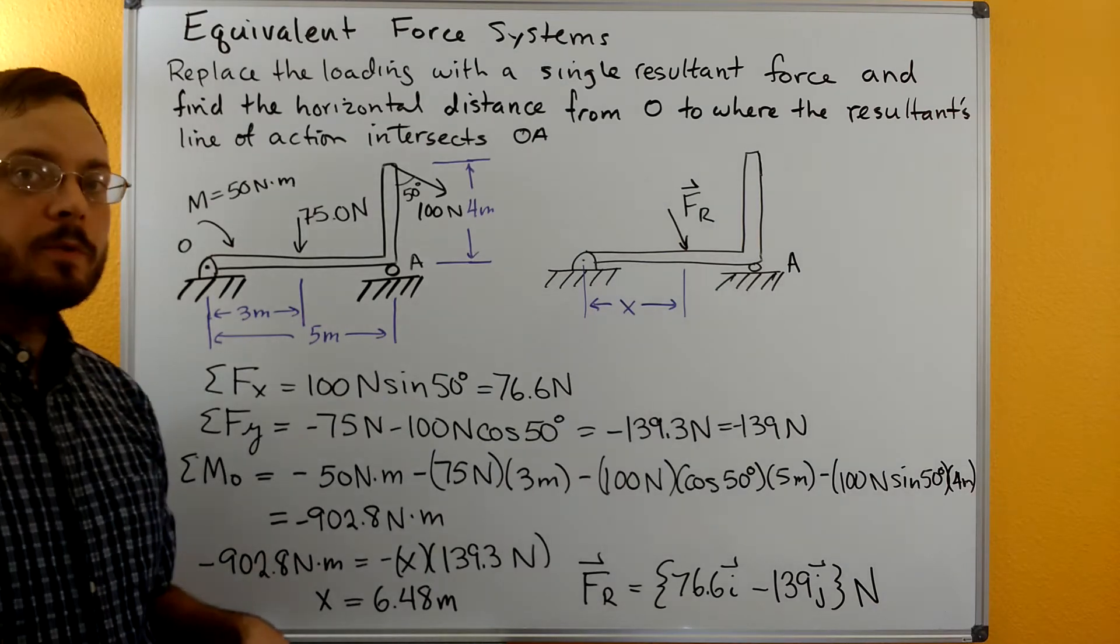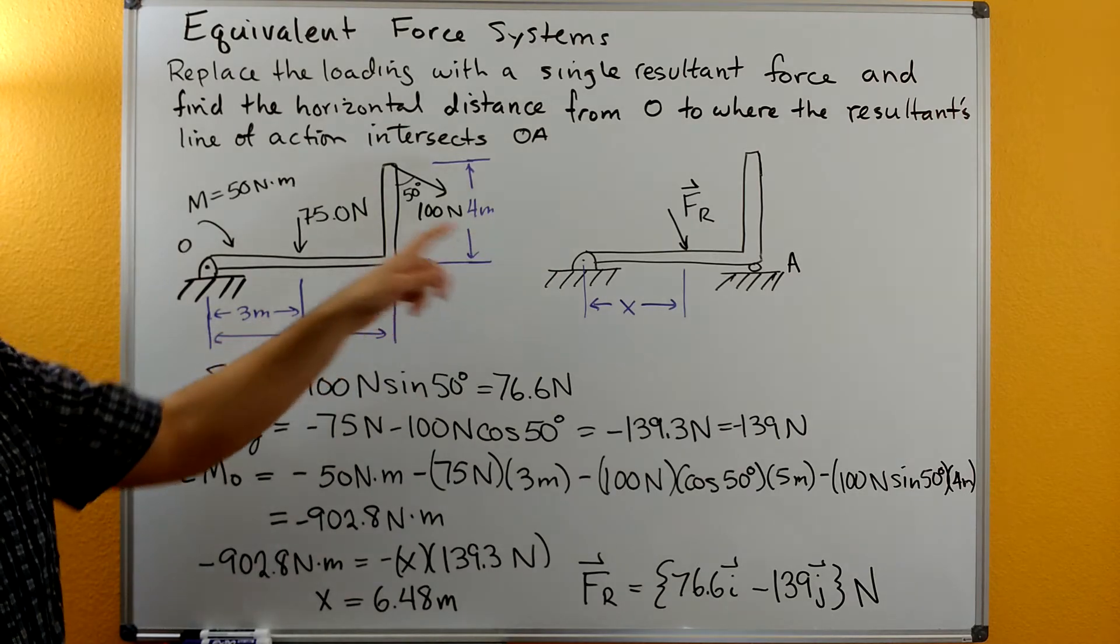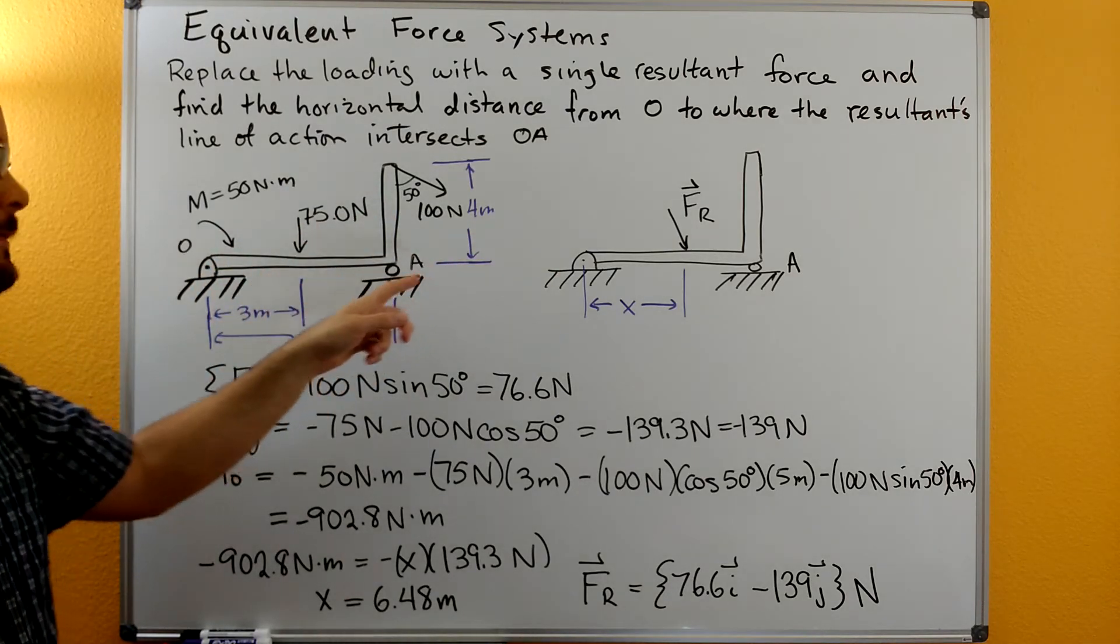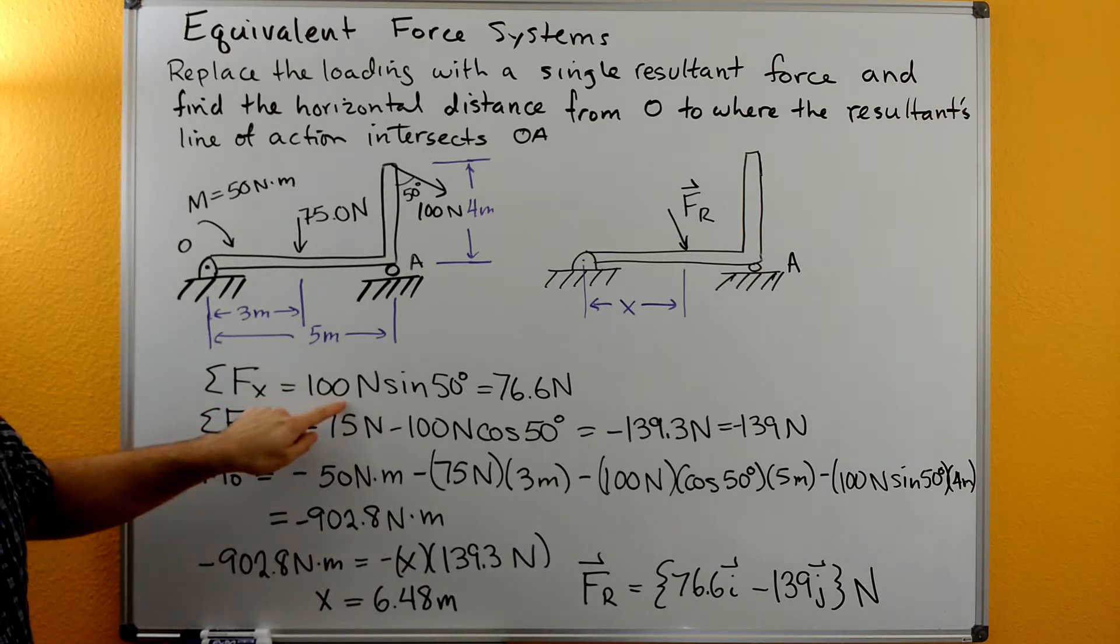To do this we want to first find the resultant. We can find the resultant by making the sum of forces be the same in both systems. So if we do sum of forces over here, we'll have the X component of the 100 Newton force.